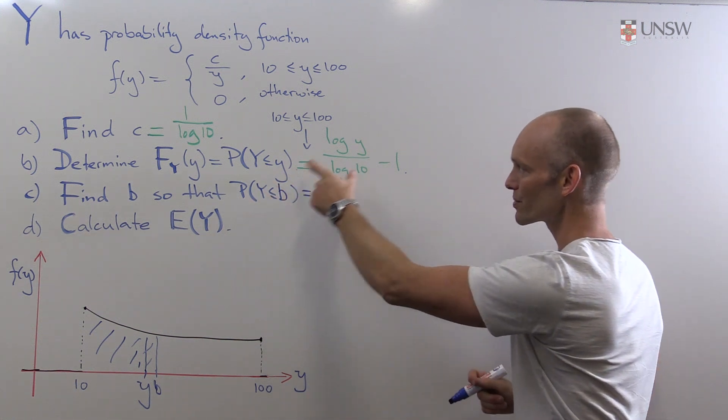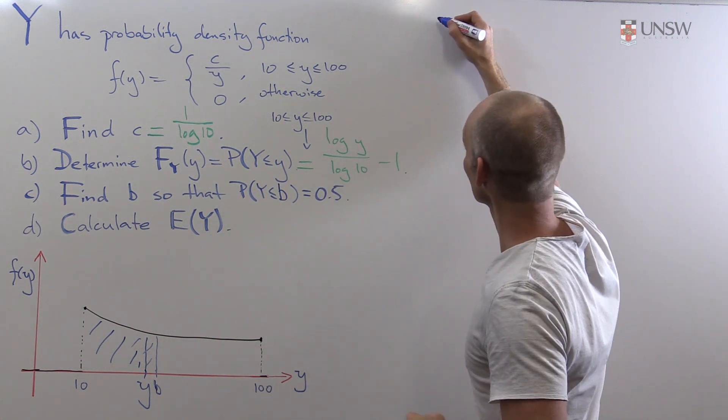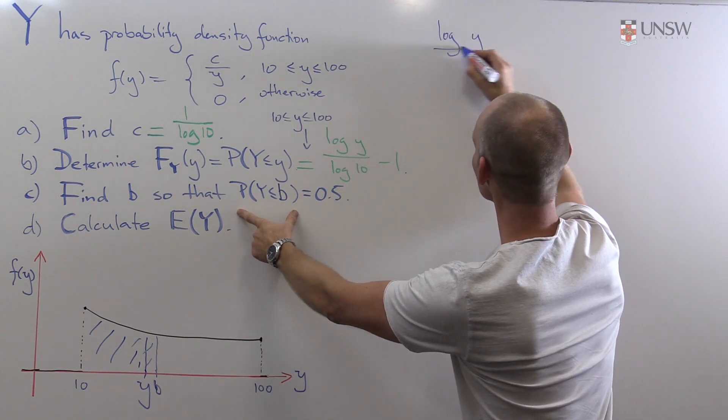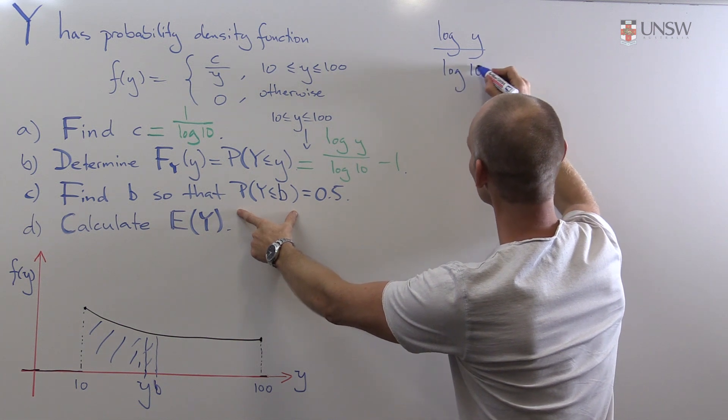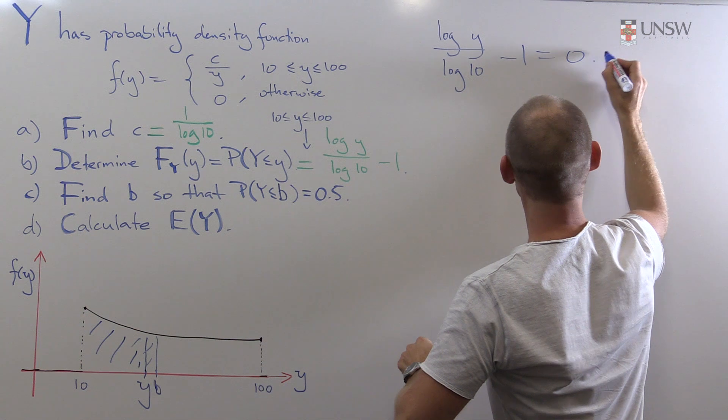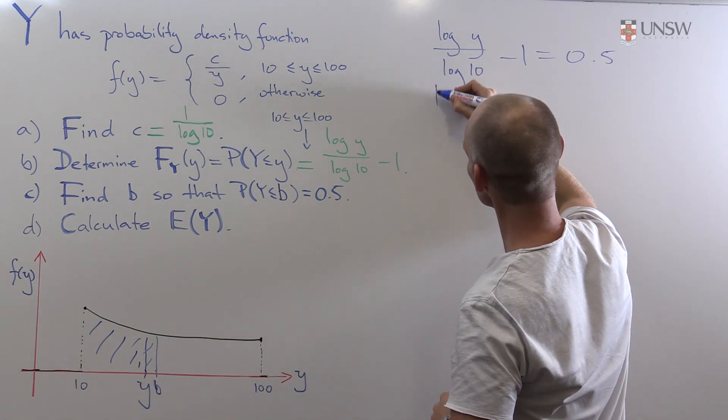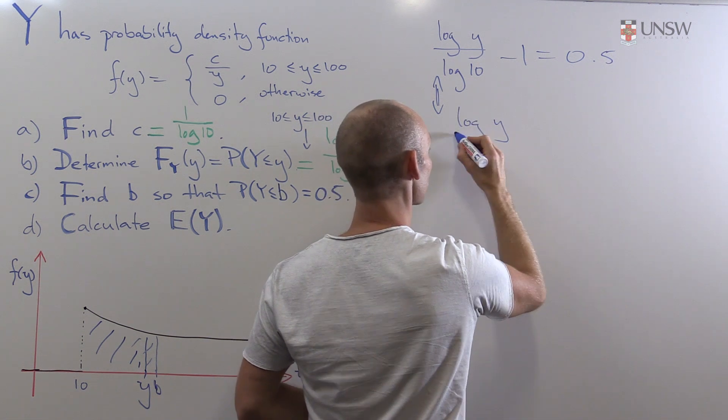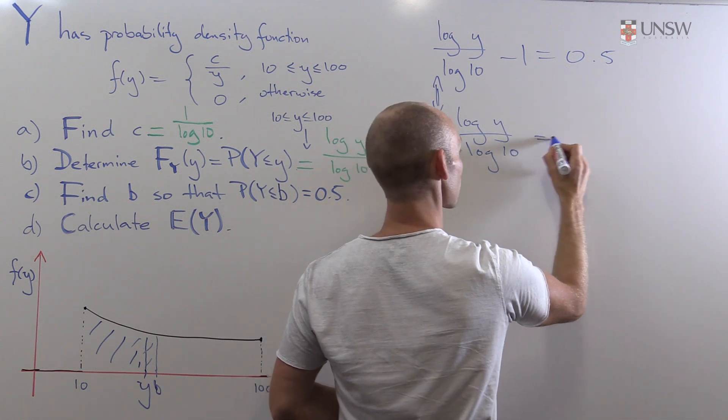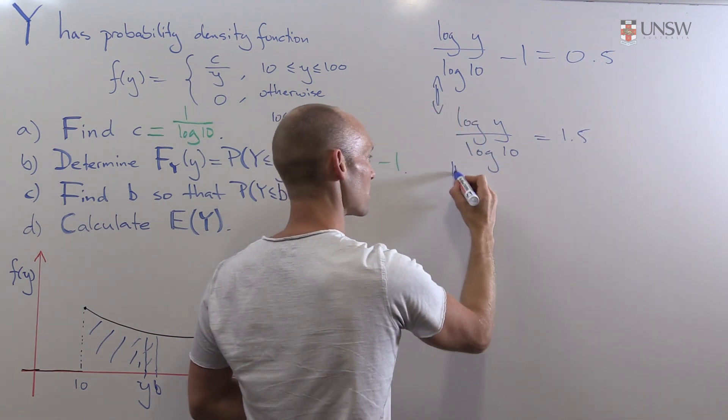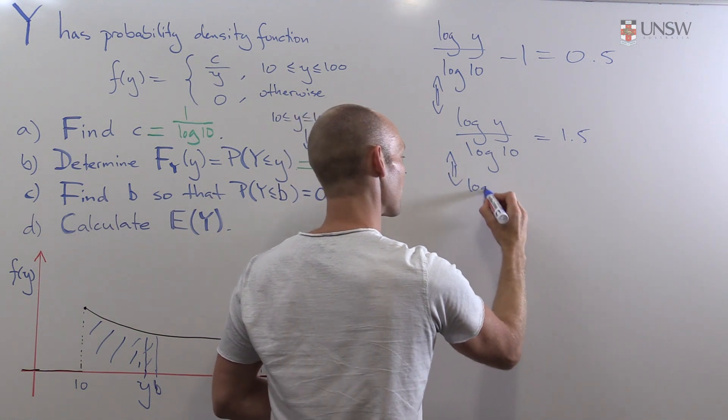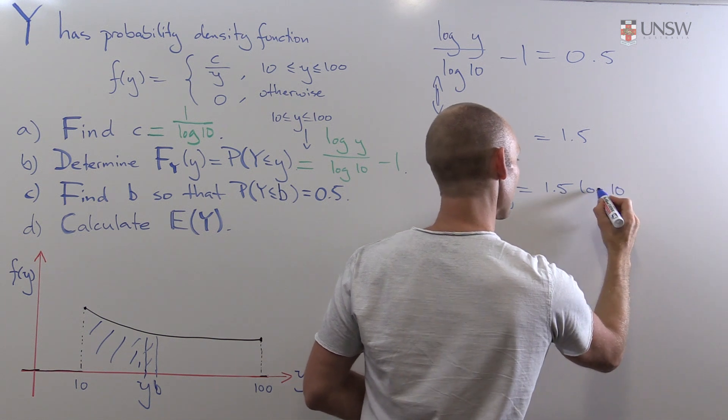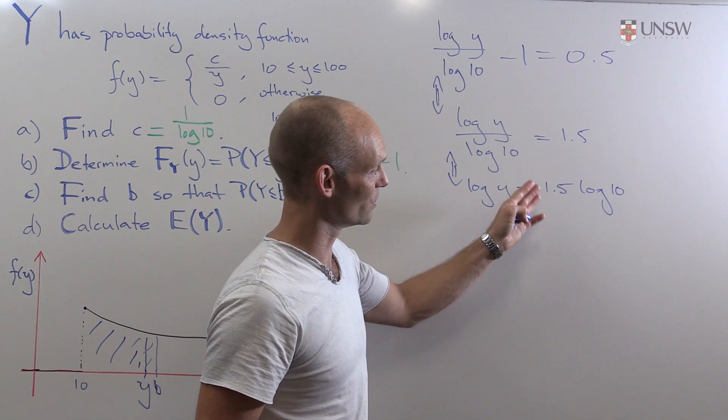So we just have to figure out what the solution is to this equation. And that's easy because we know what that's equal to. We've just calculated it in part b. So the left-hand side here is the logarithm of y divided by the logarithm of 10 minus 1. That has to be equal to 0.5. We move the one to the other side. So we have log y divided by log 10, that's equal to 1.5. We can multiply log 10 on both sides. Log y is equal to 1.5 times the logarithm of 10.